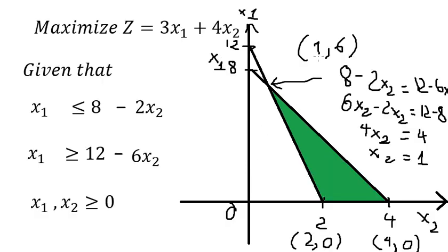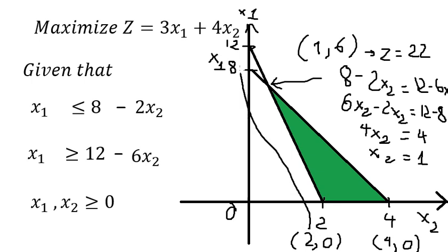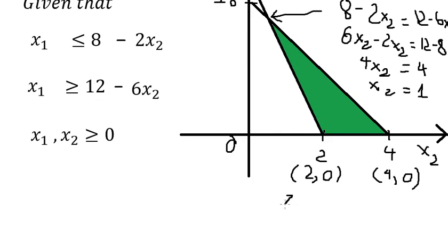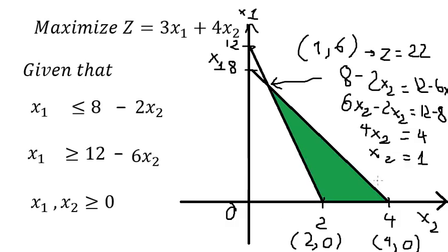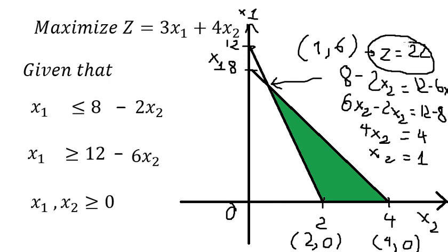Now after we find all the corner points, we compare which gives the maximum value of Z. Substituting S2=1 and S1=6 gives Z equals 22. Substituting S2=0 and S1=8 gives Z equals 8. For the last point we have Z equals 16. So the maximum is Z equals 22.